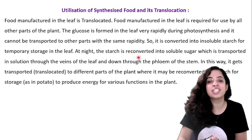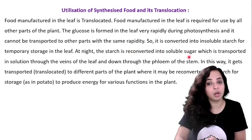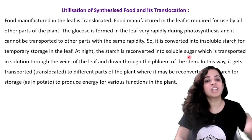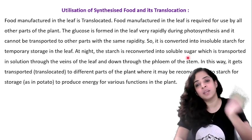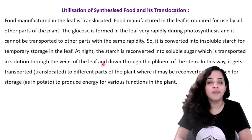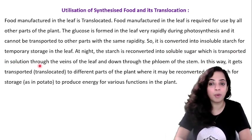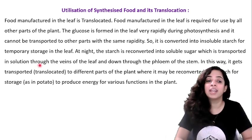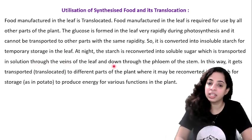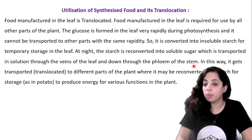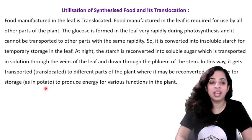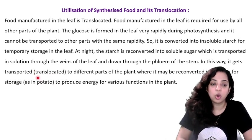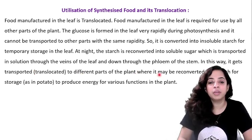At night, this starch is re-converted back into soluble sugar. Because it is now soluble, it dissolves in water and is transported in solution form through the veins of the leaf and down through the phloem of the stem to different parts of the plant.